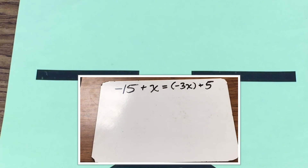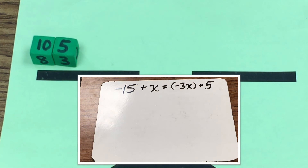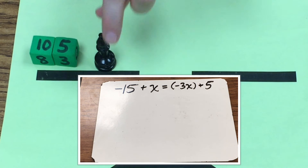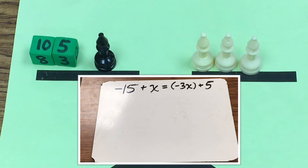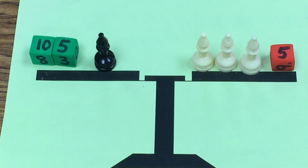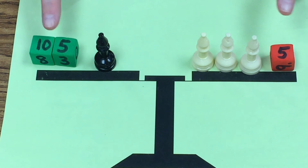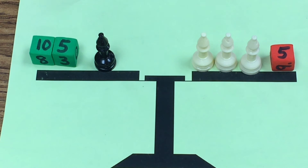For my third problem I have negative 15 plus x equals the opposite of 3x plus 5. Going back to my legal moves — I cannot remove anything from both sides because I have green and red on one comparison, and black and white on another, which are not the same. So I know I'm going to have to add things to the scale.